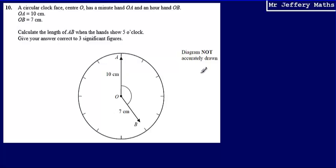This is question 10 from a series of videos taking a look at the Edexcel practice papers. Here we're told a circular clock face center O has a minute hand OA and an hour hand OB. We're told that OA is equal to 10 centimeters, and OB is equal to 7 centimeters. We can see that we've got this drawn onto our diagram.